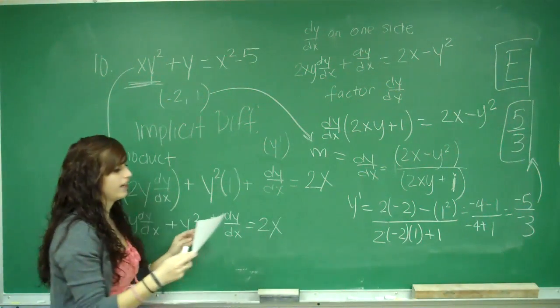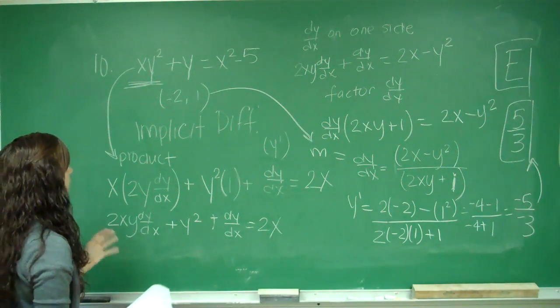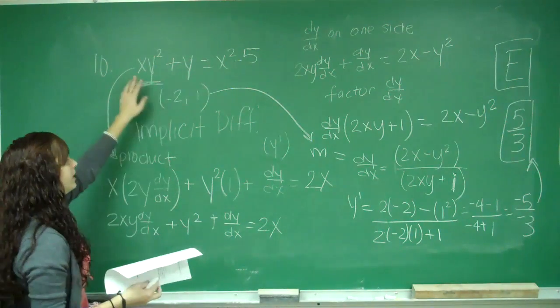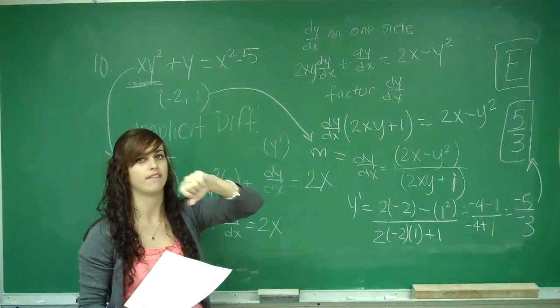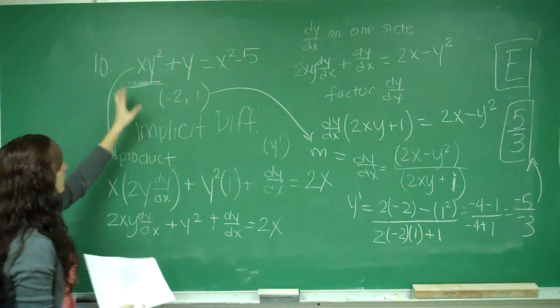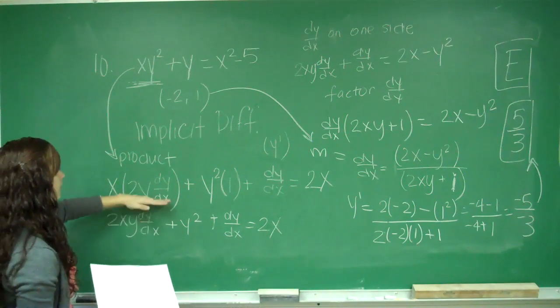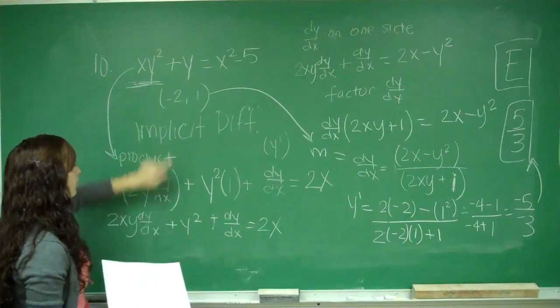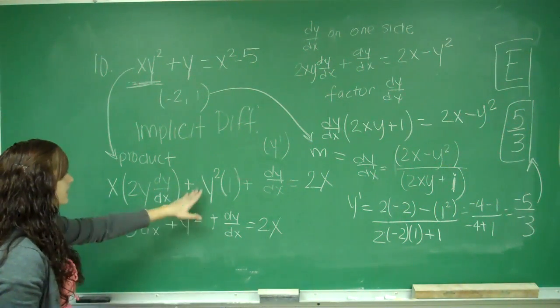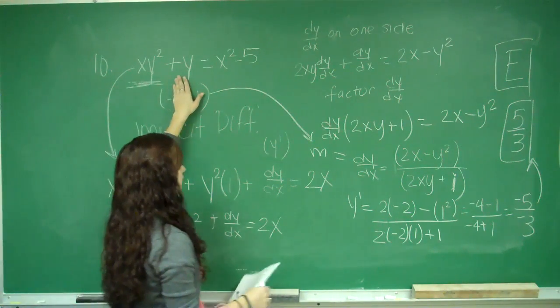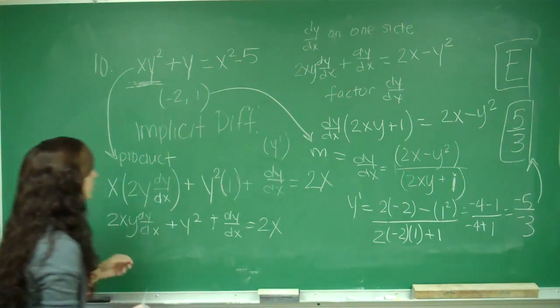So on number 10, they give us a function and ask us to find the slope of the tangent line to the curve. When I see slope of tangent line, I know I have to find the derivative. Because I can't factor out a y and get y on one side and x on one side, I have to use implicit differentiation. For the first term, we have to be careful to use product rule. So I did first times derivative of the second. After you take the derivative of y, you have to add in dy/dx or y prime, plus second times derivative of the first. Then I did the derivative of y, which is dy/dx, and the derivative of the other side, which is 2x.